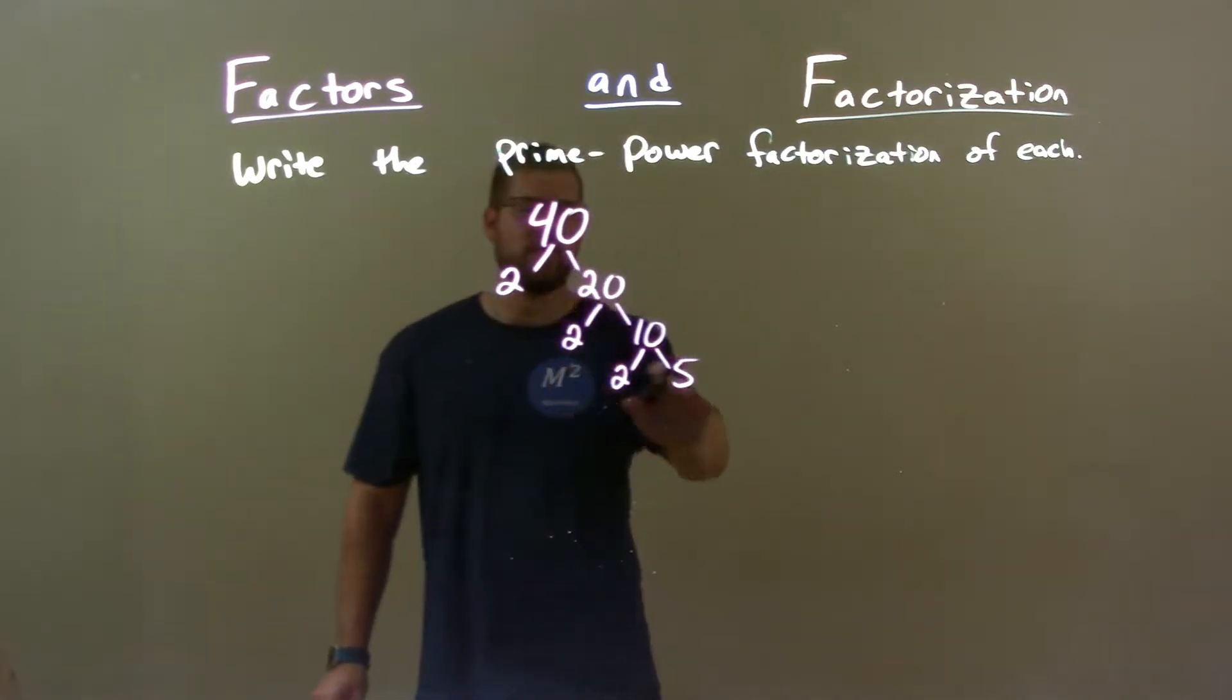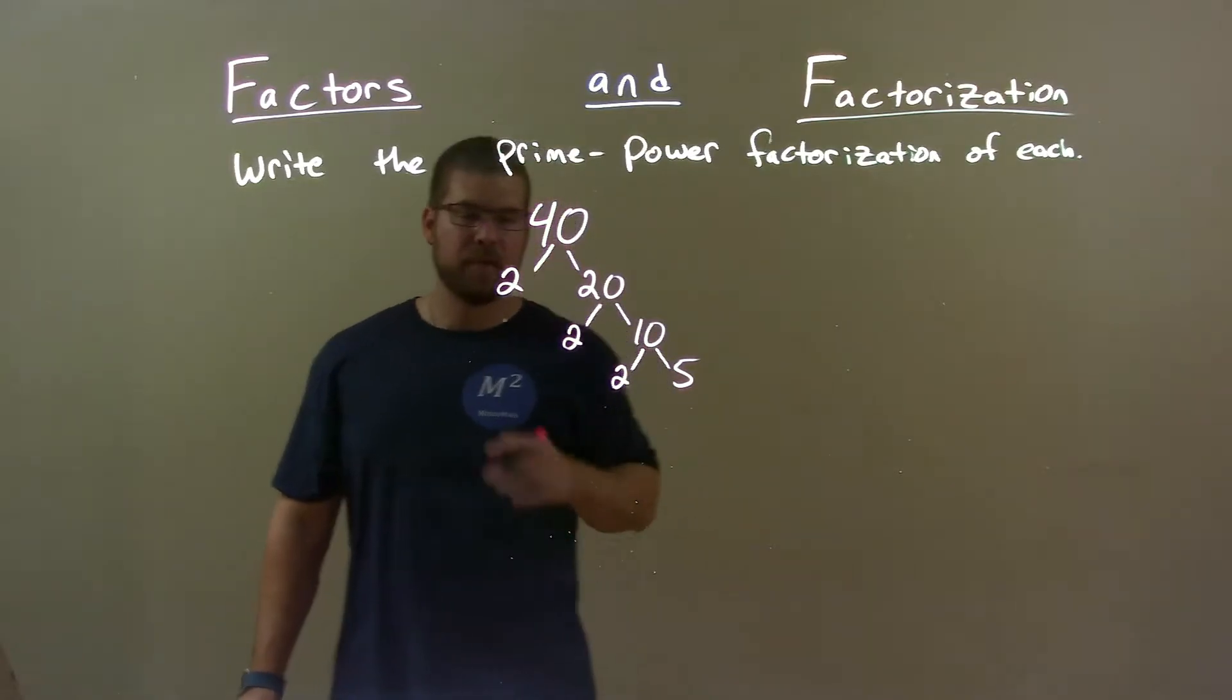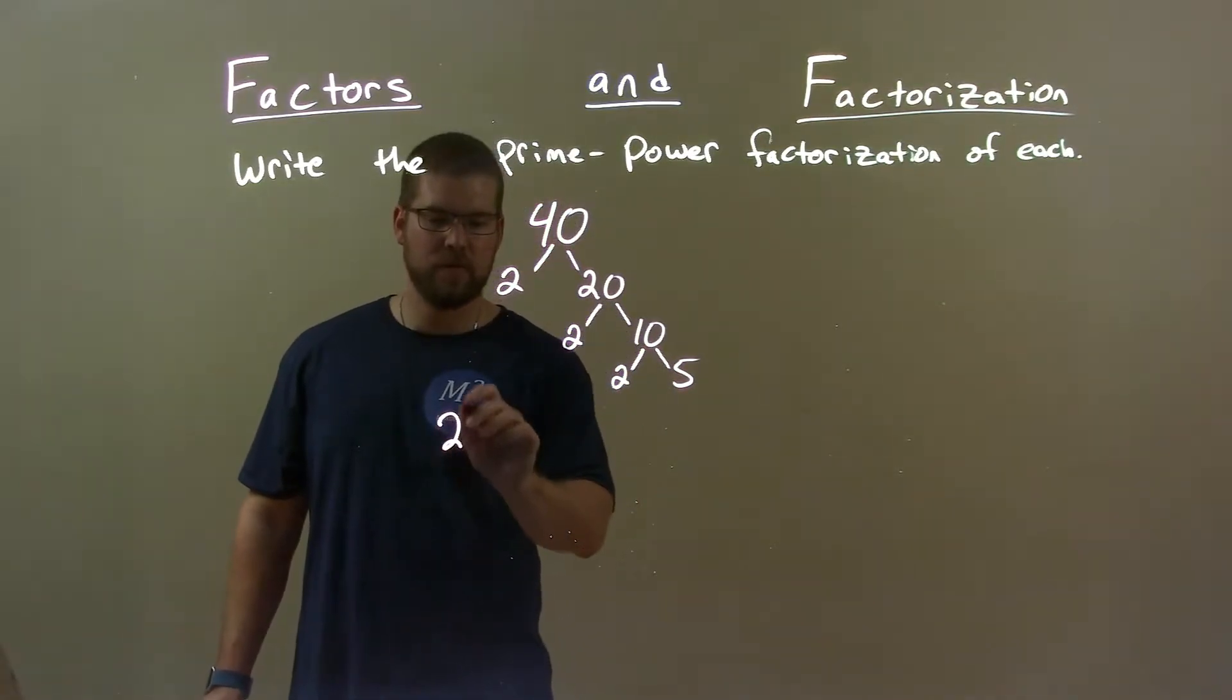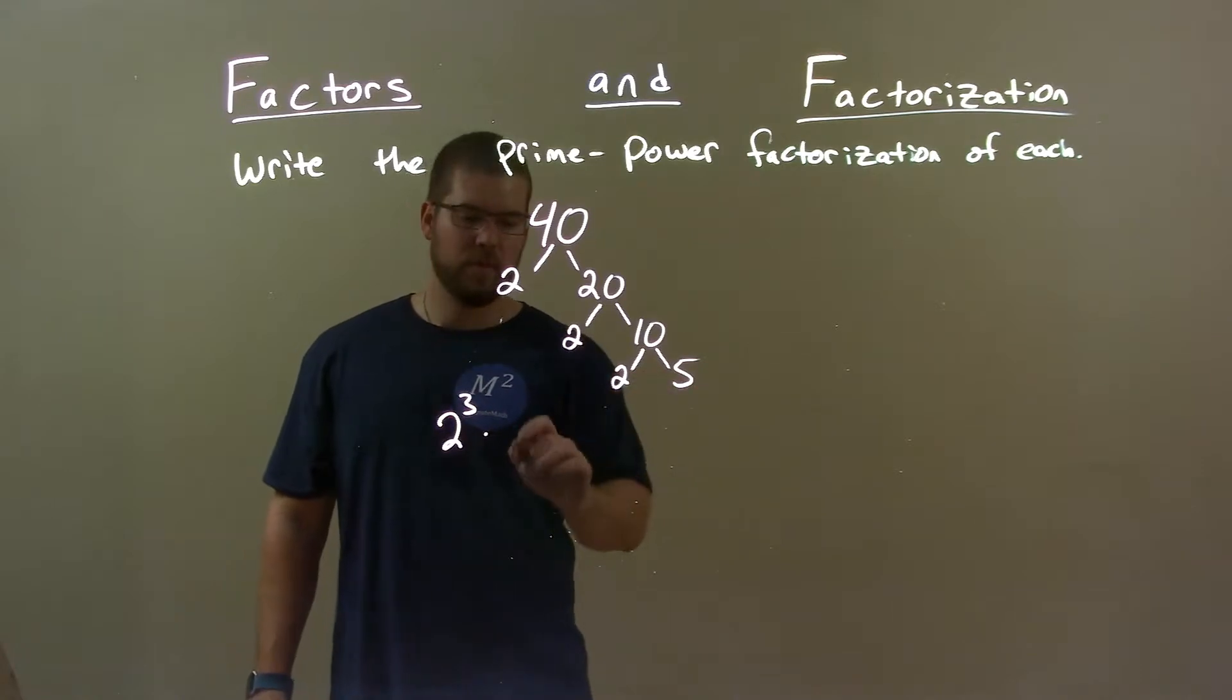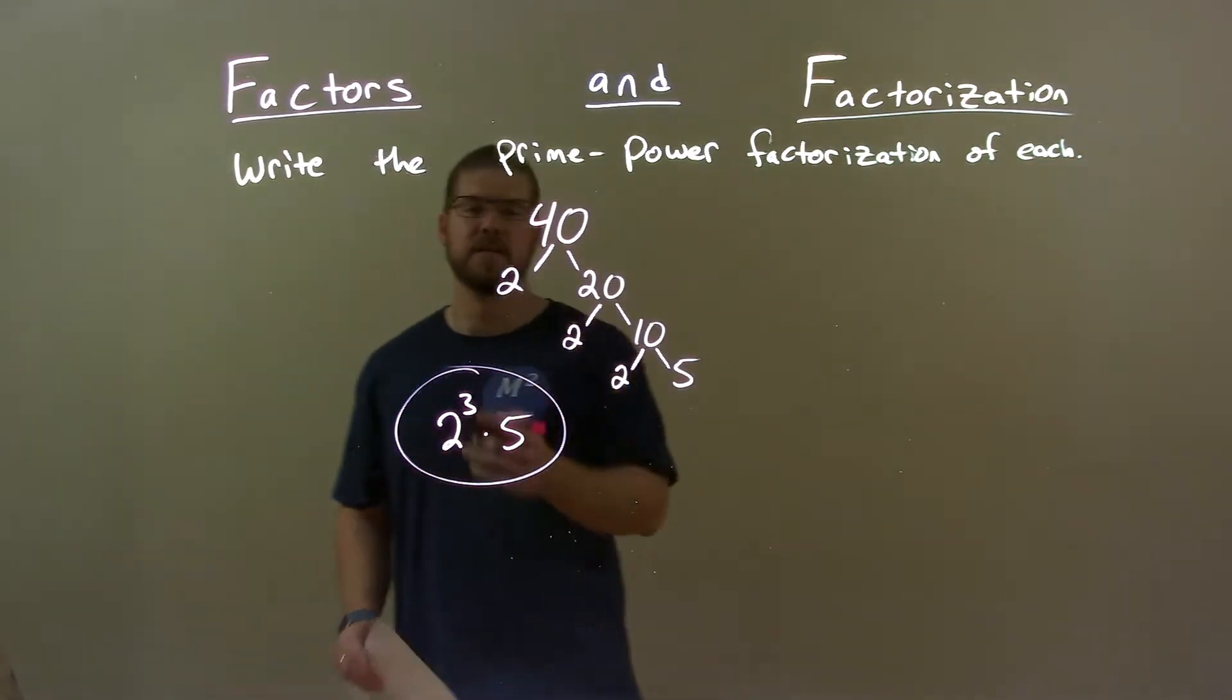And now we have all the prime numbers that 40 can be broken down to, right? So now let's group them together. We have three 2s, so we have 2 to the third power, and that's just multiplied by 5. So our final answer here, 2 to the third times 5.